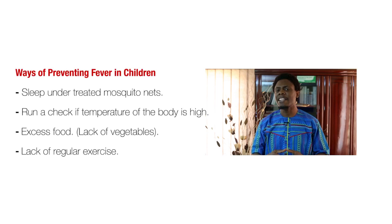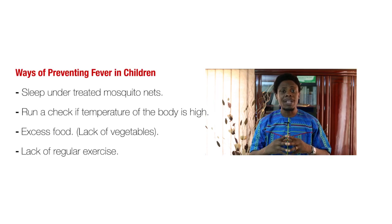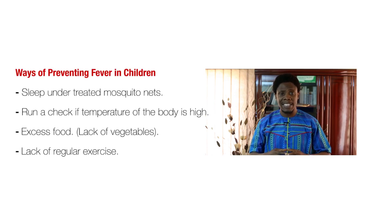So we want to prevent the things that cause fever in children. The very common one in tropical Africa is malaria. We want our children to sleep under insecticide-treated nets. We also want to diagnose malaria on time — when you see your child's body is warm, take them to the hospital so they can get treatment on time.